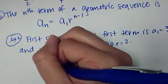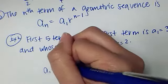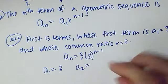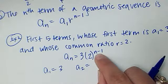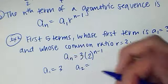Now if I want to find the first five terms, I'm going to do A1, which was given to me as 3. A2, which is 2 plug in for n, 2 minus 1 is 1, 2 to the first power is 2, and 2 times 3 is 6.